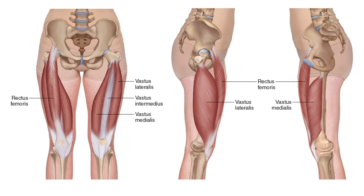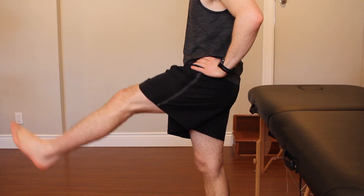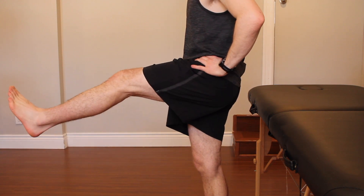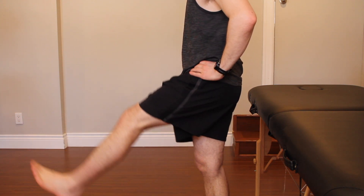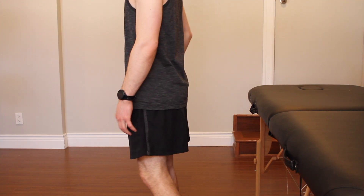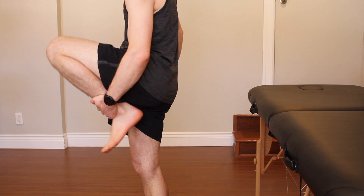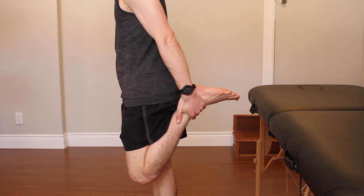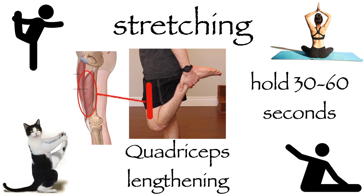Let's stay in the lower body and think about the quadriceps muscle group. The quadriceps muscles are located on the front of the thigh, and when they contract or shorten, they bring the hip forwards while straightening the knee. This means that in order to lengthen the muscle, we want to do the exact opposite — bend the knee and bring the hip backwards. So the standing quadriceps stretch would look like this. Picture the muscle across the front of the thigh being lengthened as you hold this position, and why this is a stretching exercise for the quadriceps should become clear.